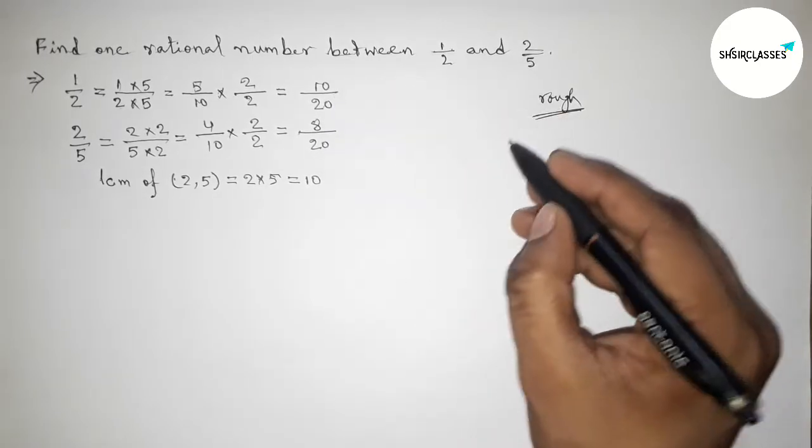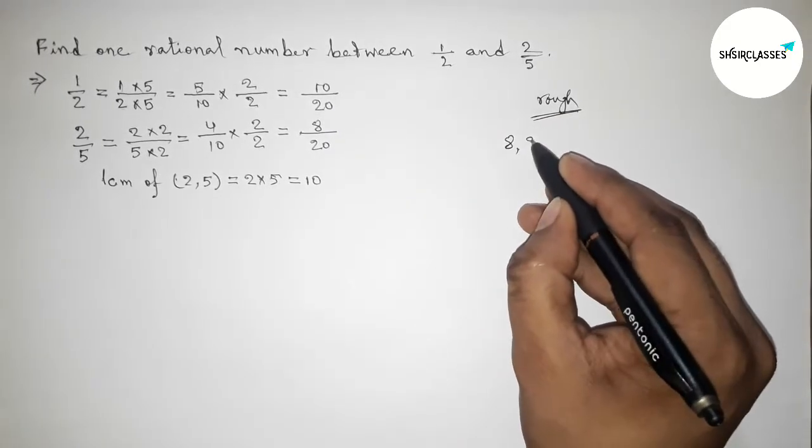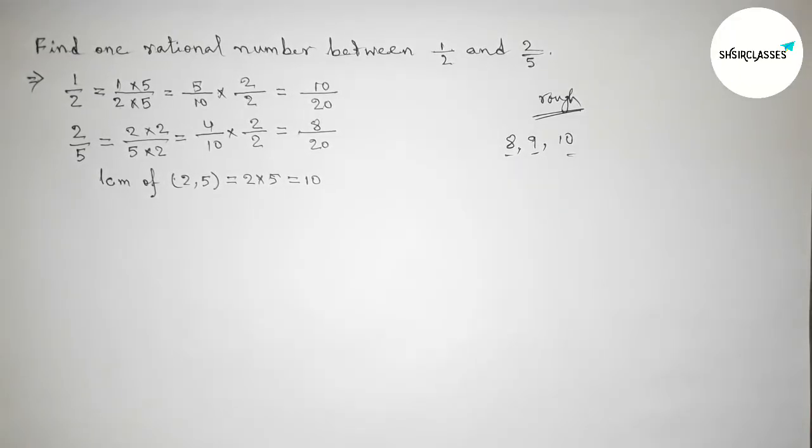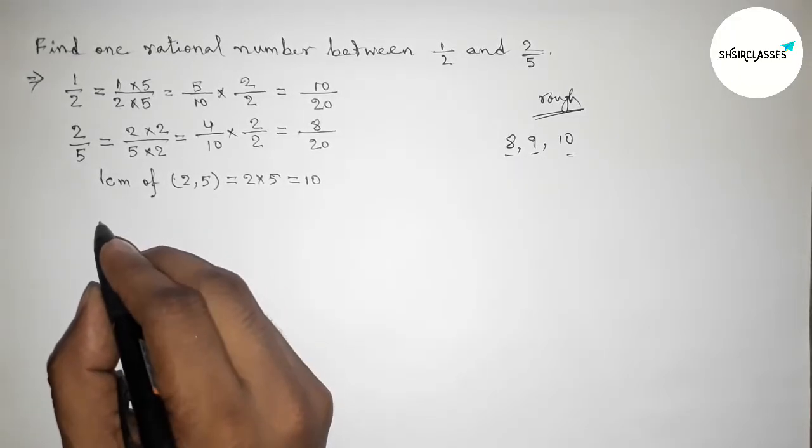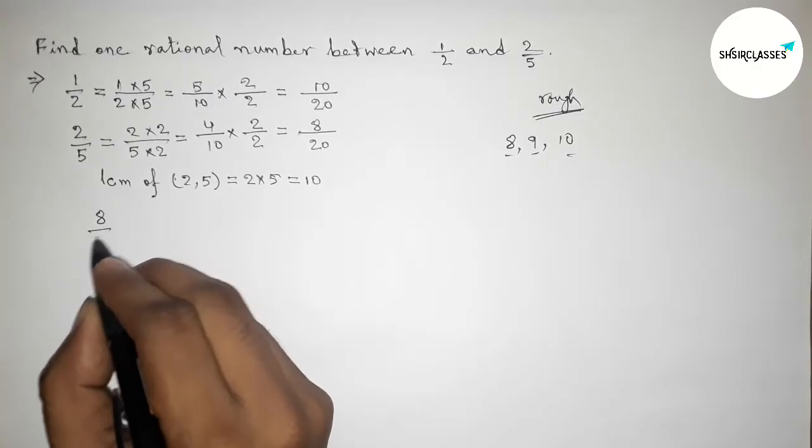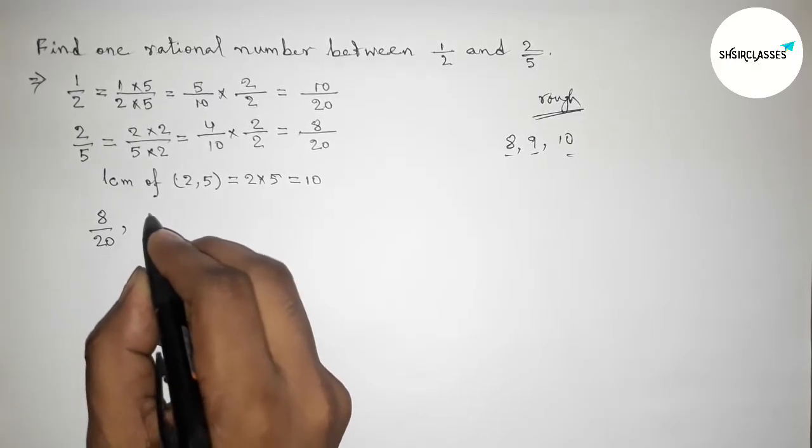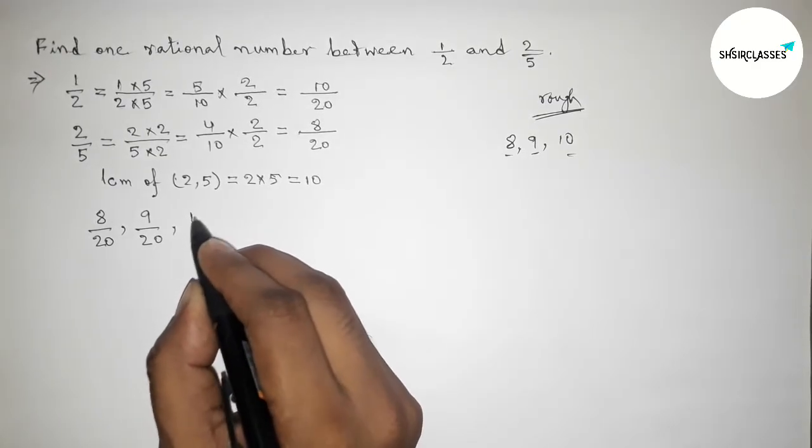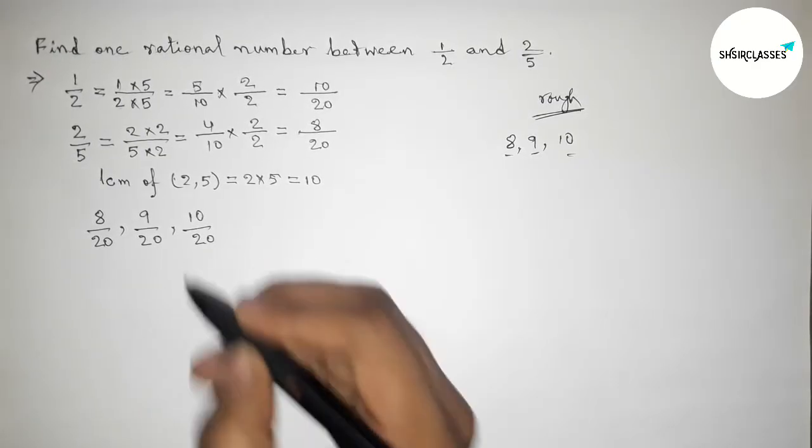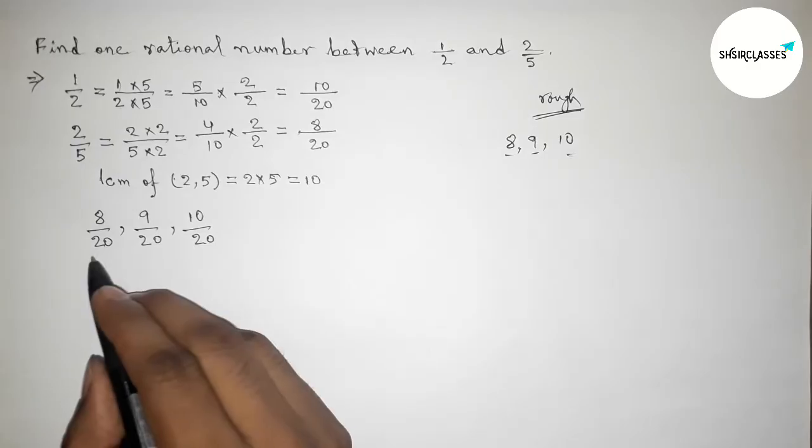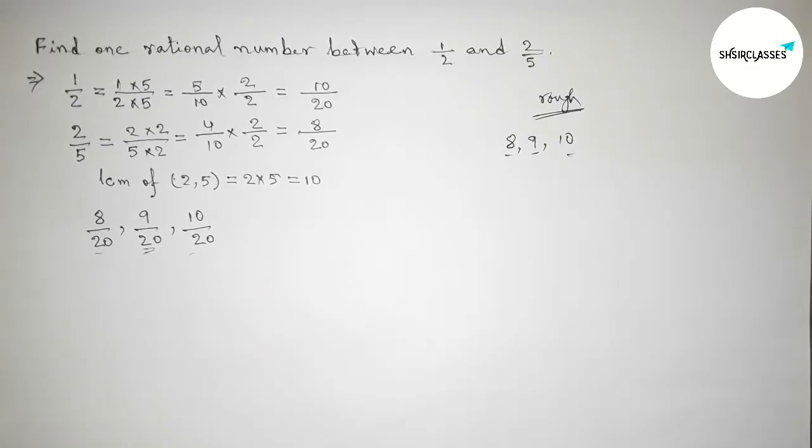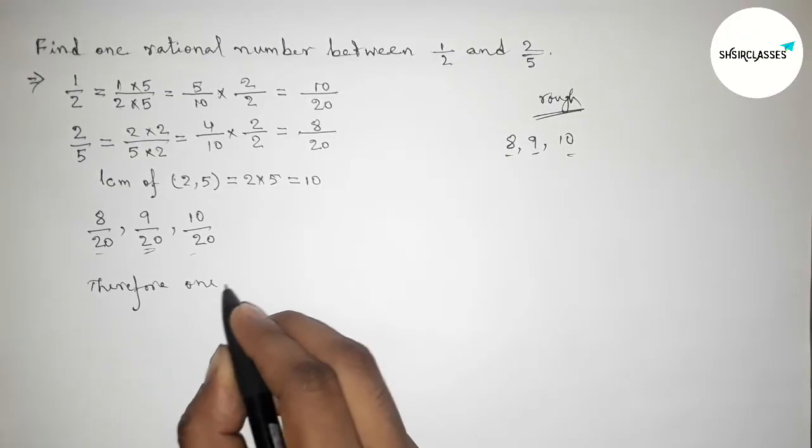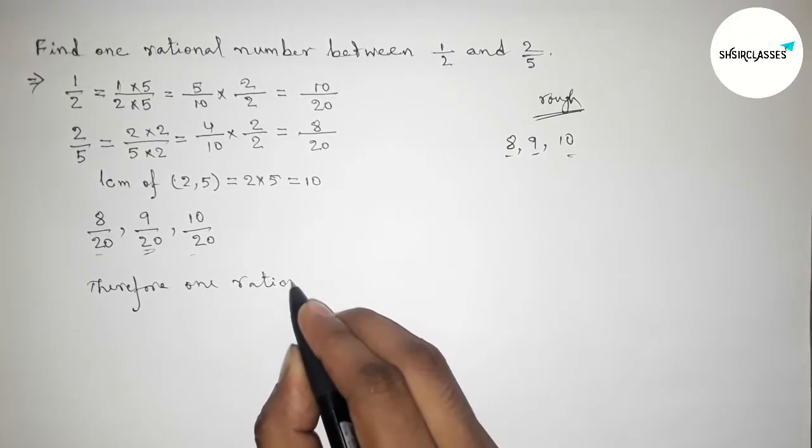Now between 8 and 10 we can get only one integer: 9. So now, writing down all the rational numbers: 8 by 20, then 9 by 20, then 10 by 20. So between 8 by 20 and 10 by 20, 9 by 20 is our required one rational number.